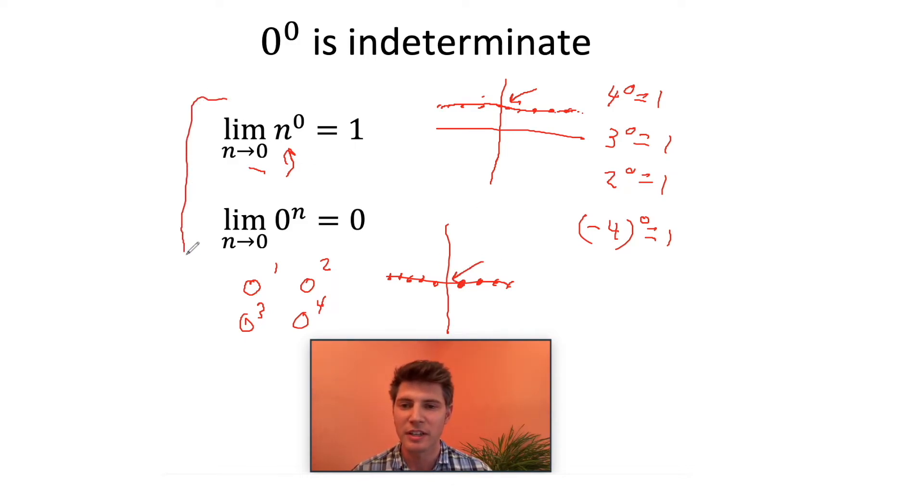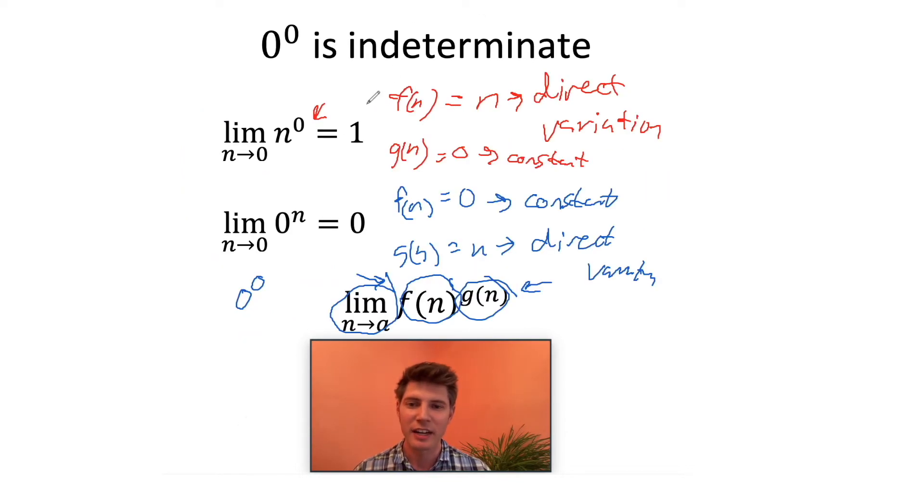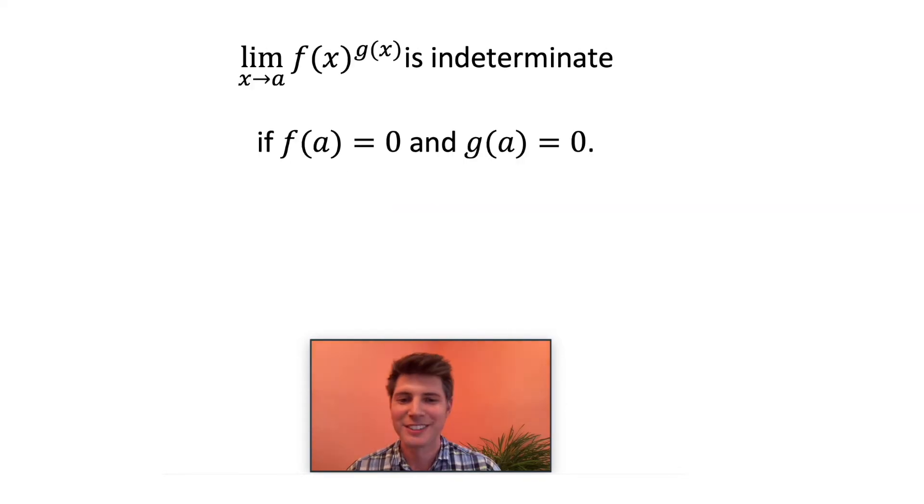So these two limits give different answers. That's why they say it's indeterminate, because you can get different answers when you're using limits and functions. And I don't disagree with this either. This is totally right. It's not intrinsically with the zero to the zero. It's the functions and the limit that cause that to happen.